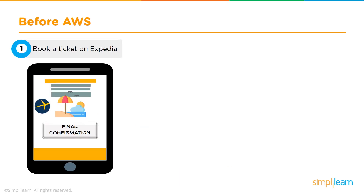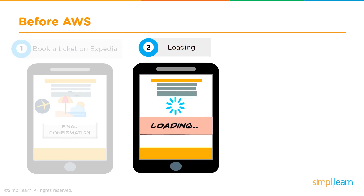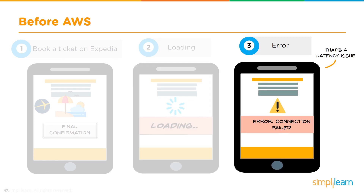Let's talk about how things were before AWS existed. Expedia, the company that helps people move around the world with ease, had a problem before they decided to migrate to AWS. Back then, booking a ticket was an unpleasant experience compared to what it is now. It would generally take a long time to book a ticket, and sometimes it would time out if there was a promotion or a huge sale and the environment could not scale up to meet the demand.